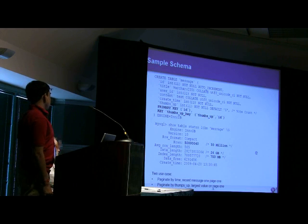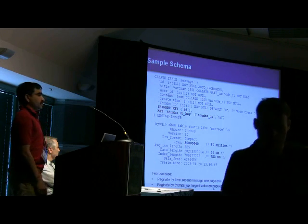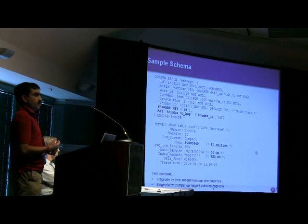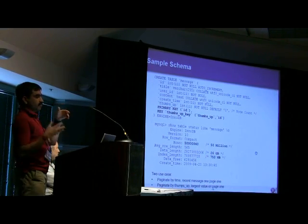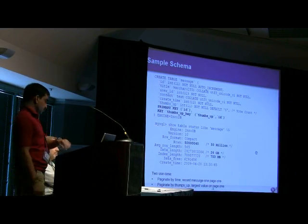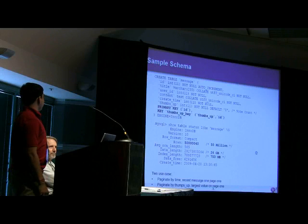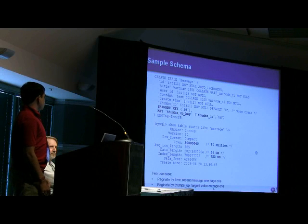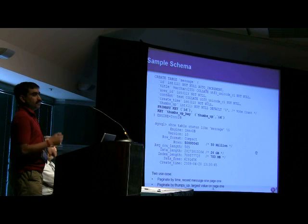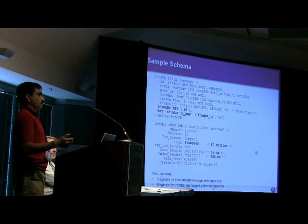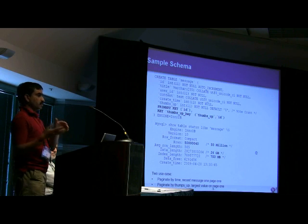And primary use case on this table is we want to paginate by time. On first page, I want to display most recent messages, and then we can go next and see older messages. And the second use case is we want to see messages sorted by popularity, meaning the message that has the most number of ThumbsUp should be on the first page, and we can scroll through the windows.